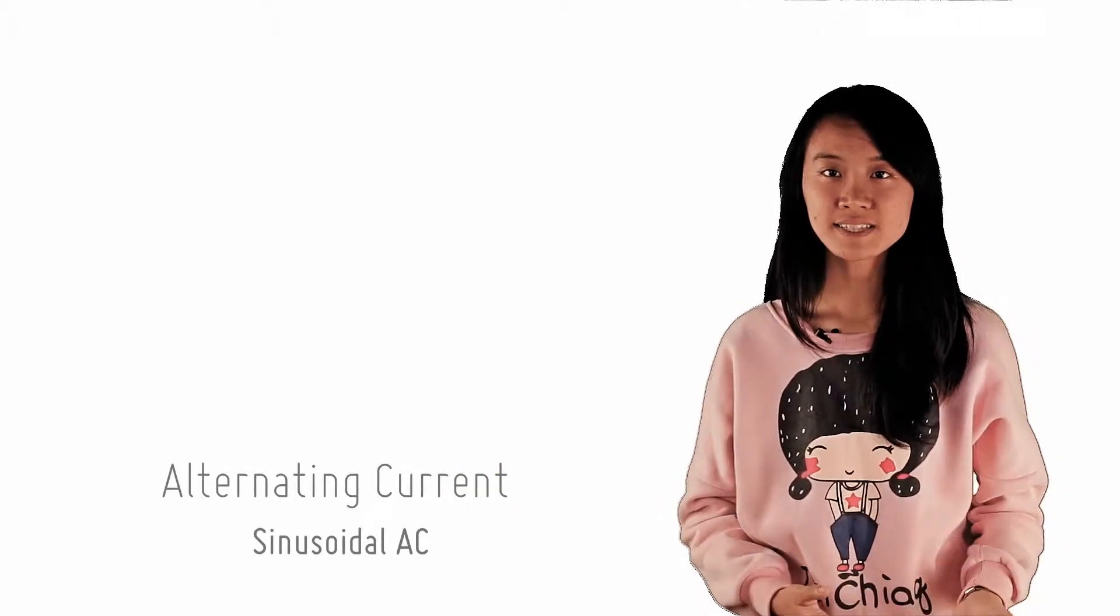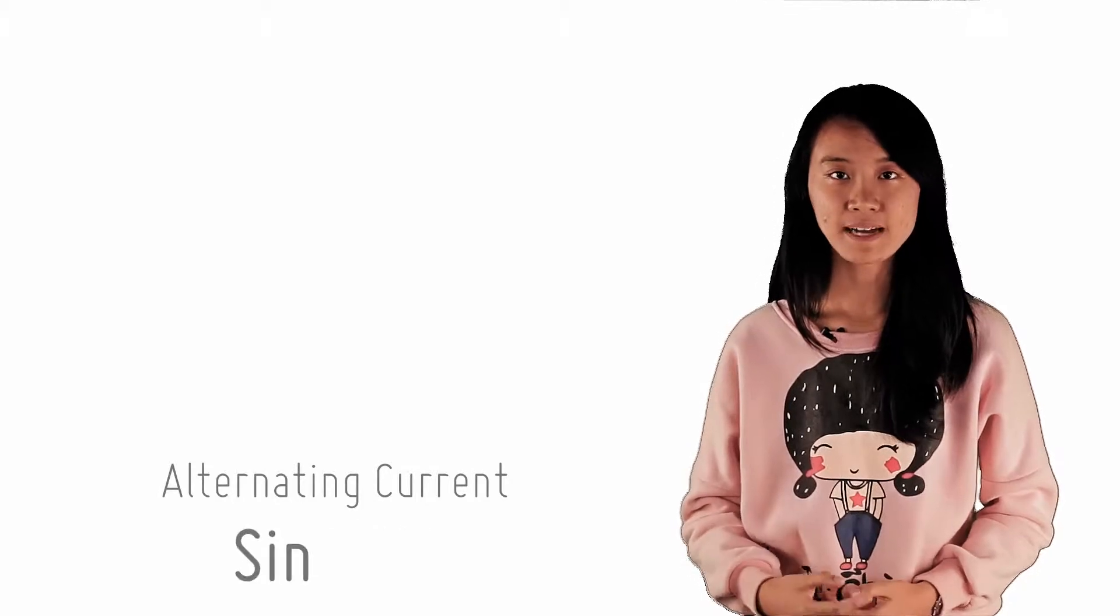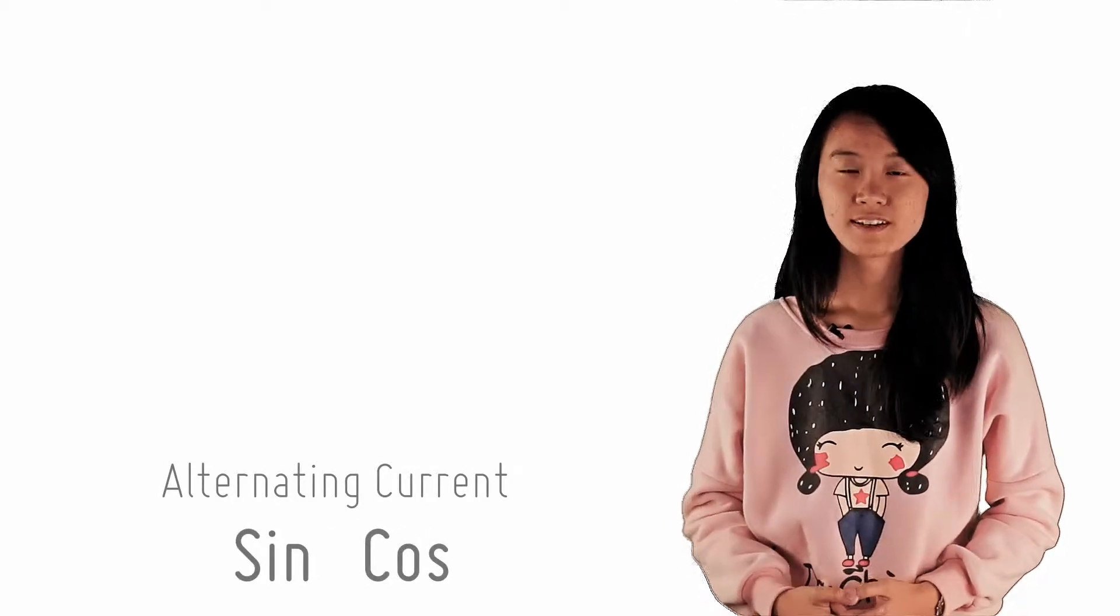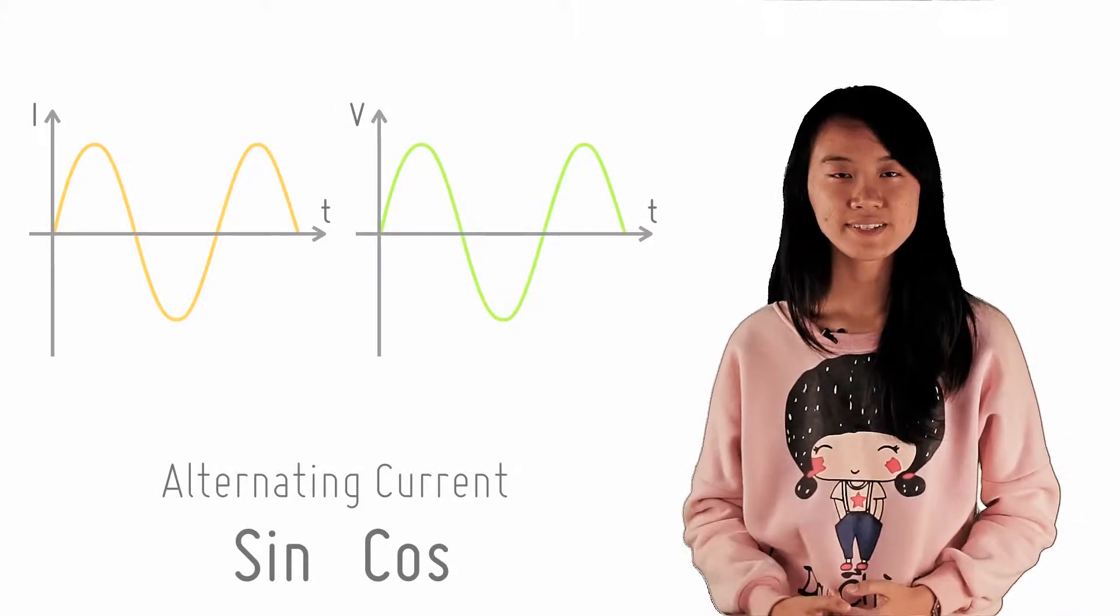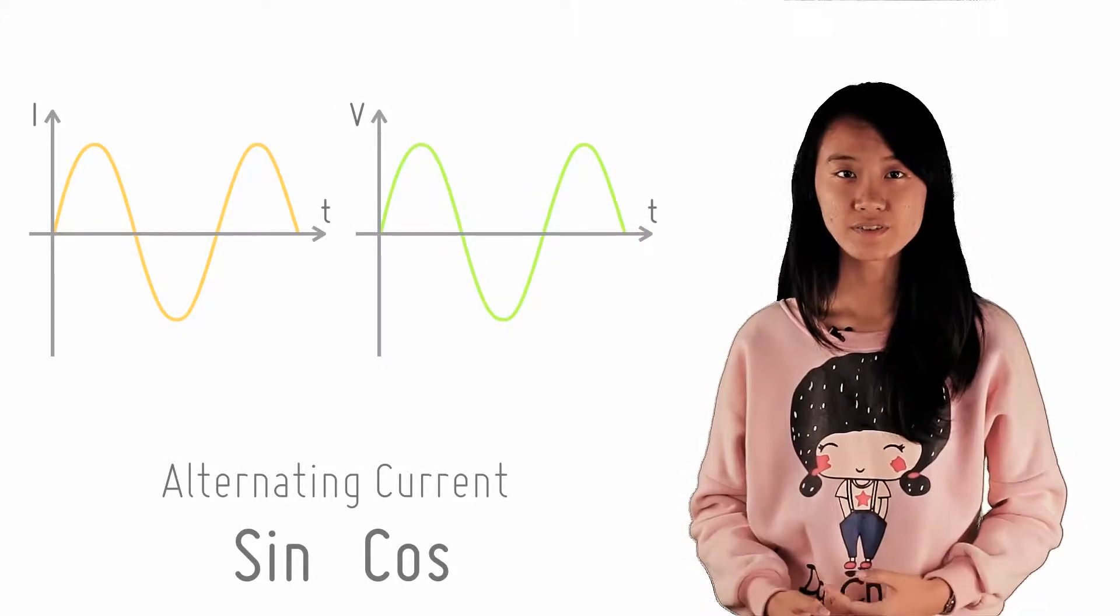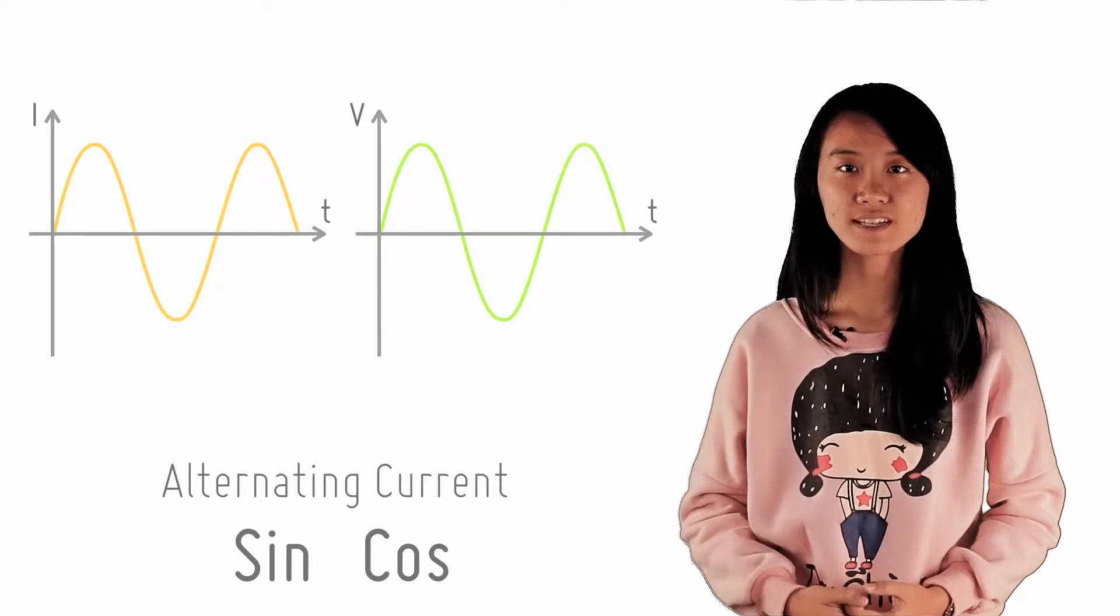A sinusoidal AC, as its name suggests, can be represented by a sine or cosine graph for both the current and the voltage. It can thus be represented mathematically, with the instantaneous current or voltage as a function of time by the following equations.